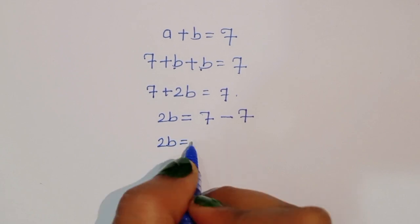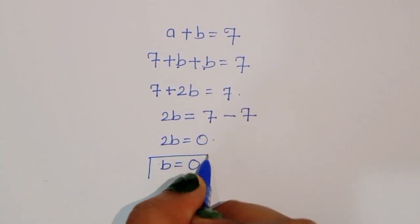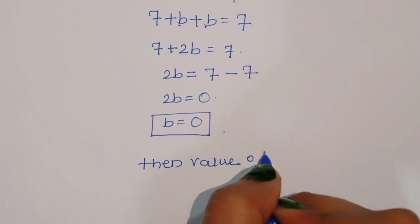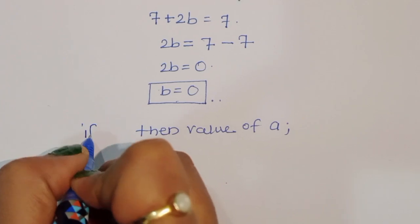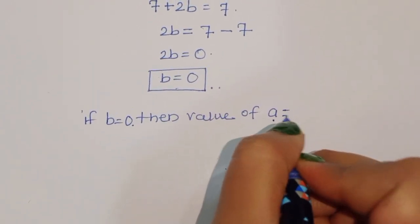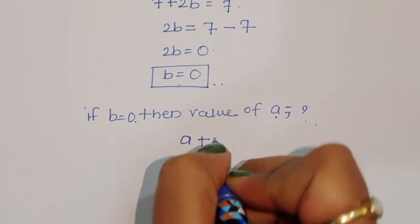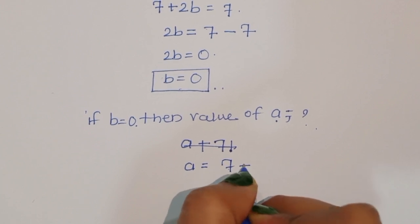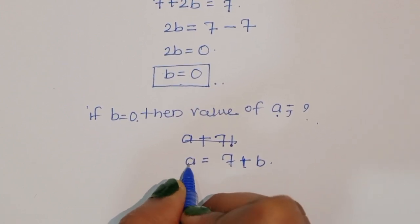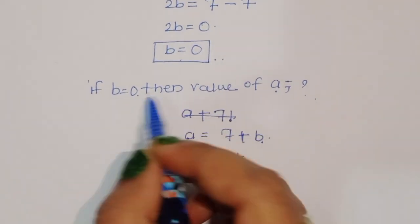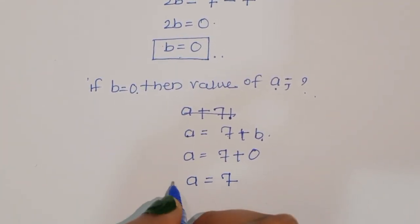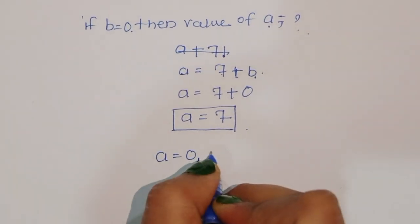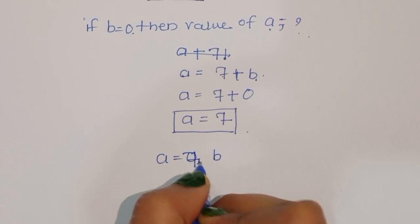So 2b equals 0, therefore b equals 0. This is the value of b for the second case. Now substituting b equals 0 back into equation 5: a equals 7 plus b equals 7 plus 0, so a equals 7. Therefore, for the second factor pair, a equals 7 and b equals 0.